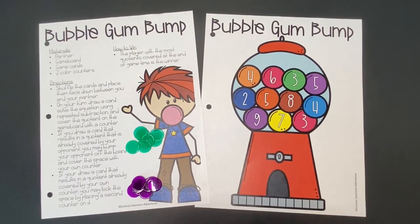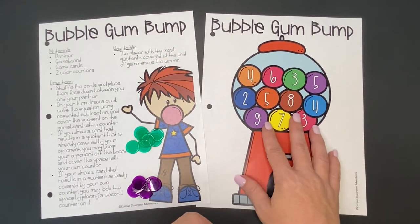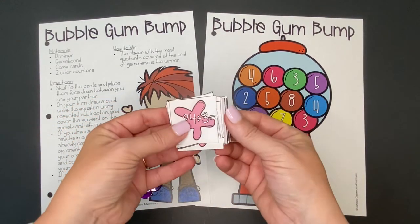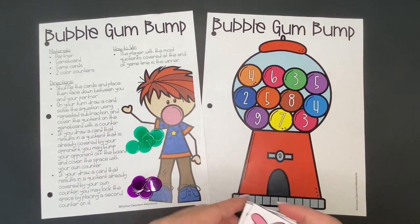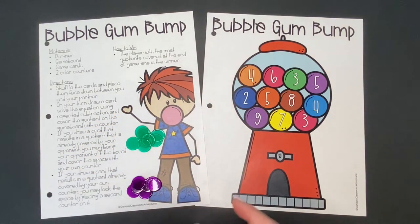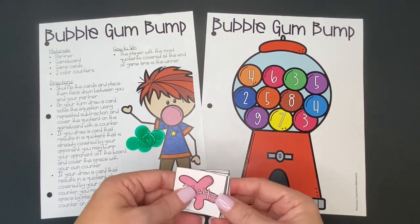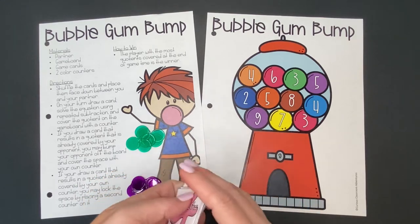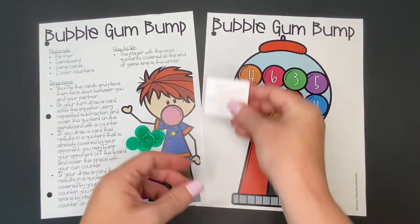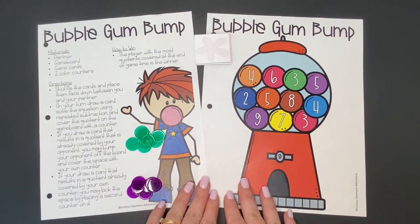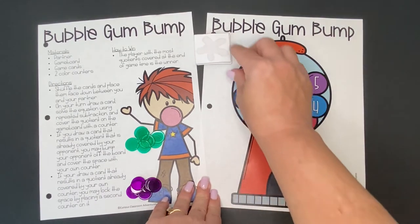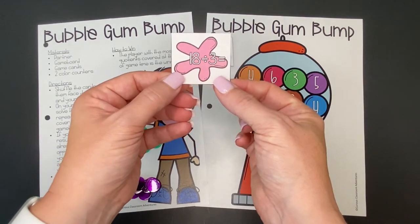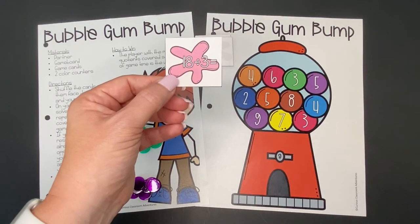To play this game, you are going to want a partner to play against, this Bubblegum Bump board, and the little Bubblegum division cards. You and your partner will both need a set of counters that are different colors so that you can keep track of who has which spot on the board. To start off, we're going to shuffle up our cards and place those face down where both players can reach them. On your turn, you're going to draw a card, and since we're practicing division as repeated subtraction, we're also going to want some scrap paper to solve with.